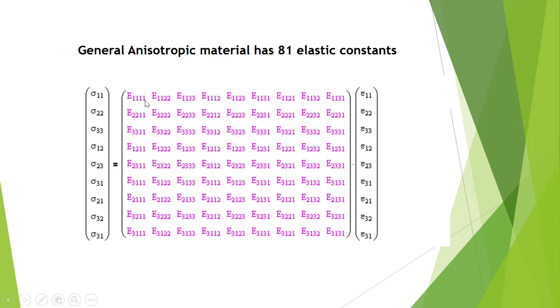Here we can see E1111, which corresponds to Sigma 11 as well as epsilon 11. So Sigma 11 equals this particular quantity times epsilon 11 plus this particular quantity times epsilon 22.